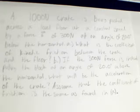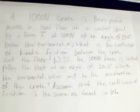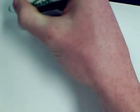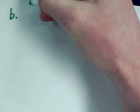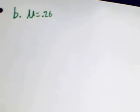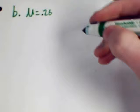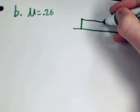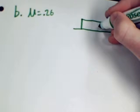Part B asks: if the 300 newton force is instead pulling the block at an angle of 20 degrees above the horizontal, what will be the acceleration of the crate? We must assume the coefficient of friction is the same as found in part A, which is 0.26. We are going to make a new free body diagram illustrating what happens when it is pulled rather than pushed.